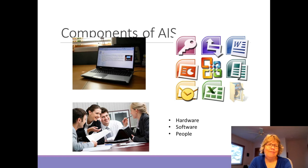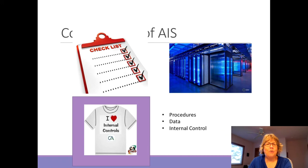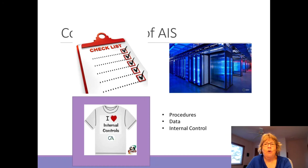Even the best hardware and software won't do anything without people. Well-trained people are essential — you can't just put somebody at the keyboard and say 'go.' They need to understand how to use the system to get the most information out of it. Beyond people, we also need procedures — for example, how do we create a purchase order to purchase goods and services needed by our organization?